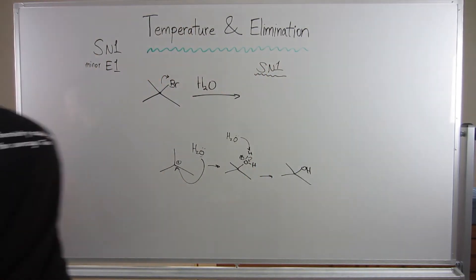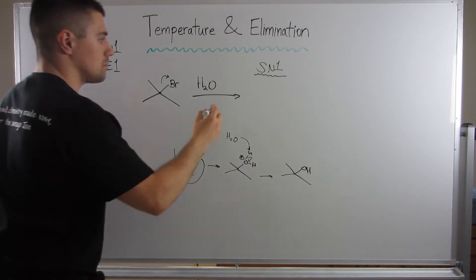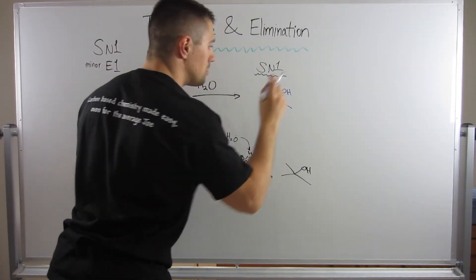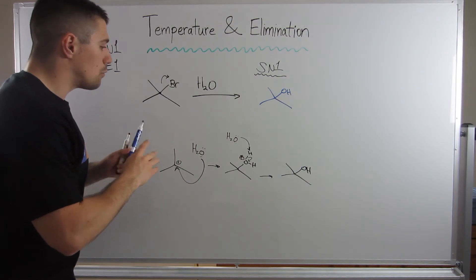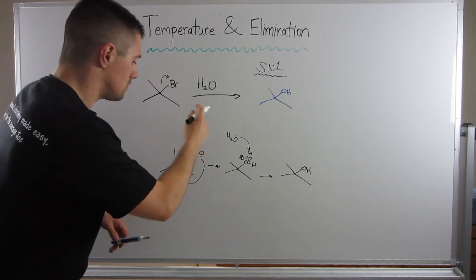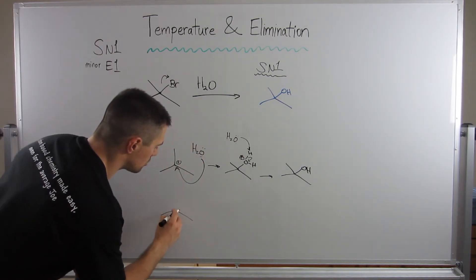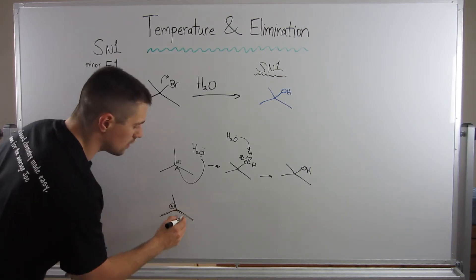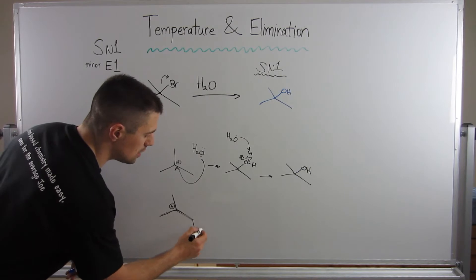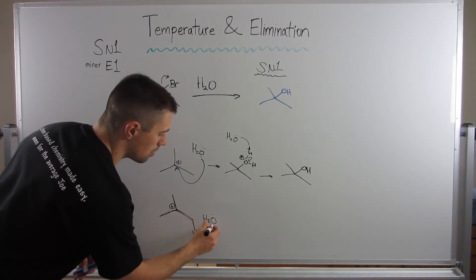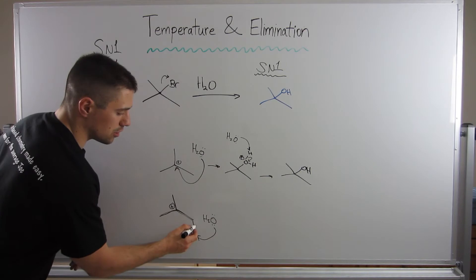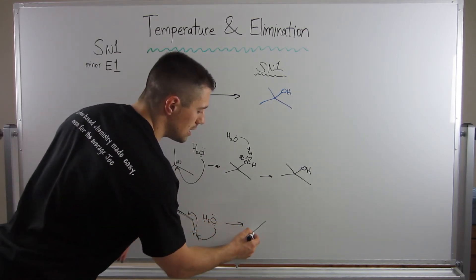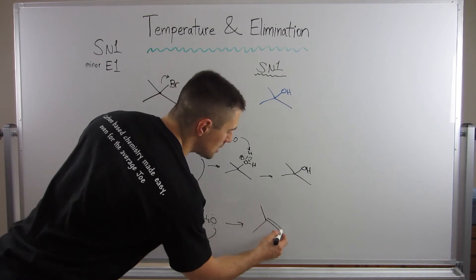We get our T-butanol. What we can do in addition to that, down here with our tertiary carbocation, instead of attacking we can pull off an adjacent H with our water. Those electrons will swing up. We will form our alkene product, our elimination product, through the carbocation way, so it's an E1 product.